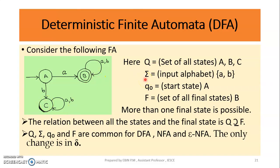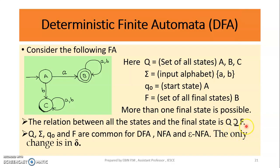Sigma is the input alphabet — for example, small a and small b are input alphabet. Q0 is the initial state; A is the initial state. Then F is the set of all final states. Capital B is a final state — we have one final state, but more than one final state is possible. The relation between all states and the final states is that Q is a superset of F.